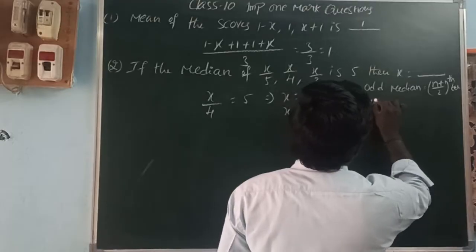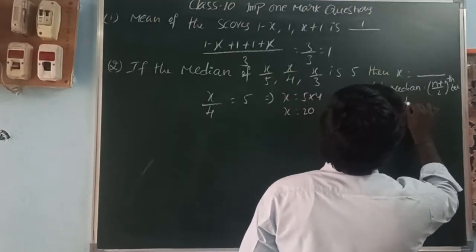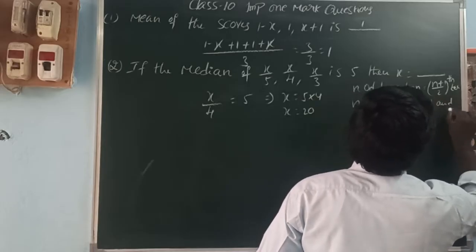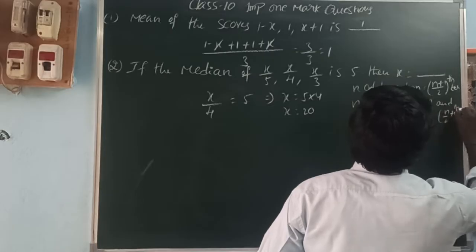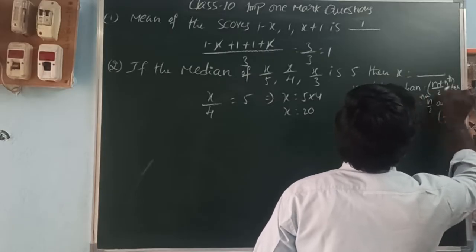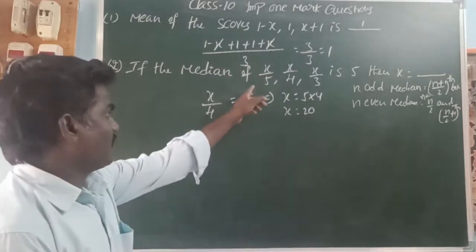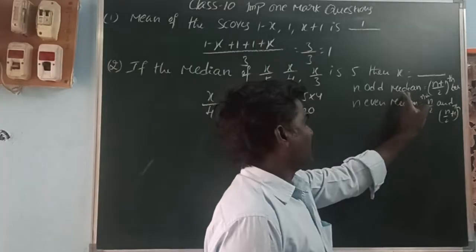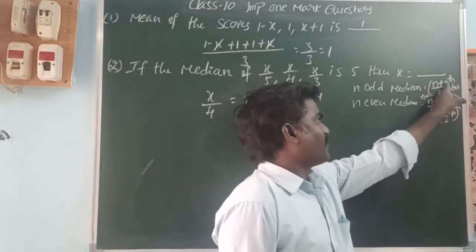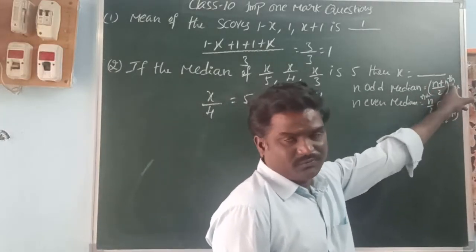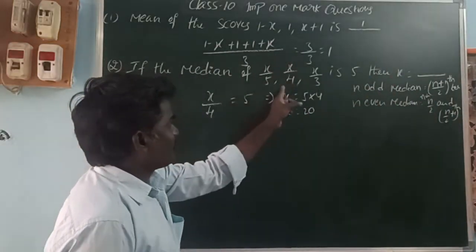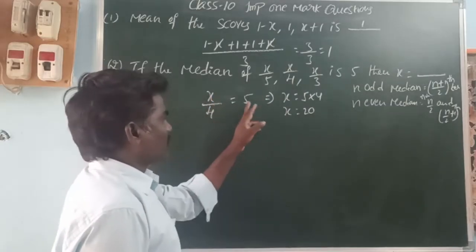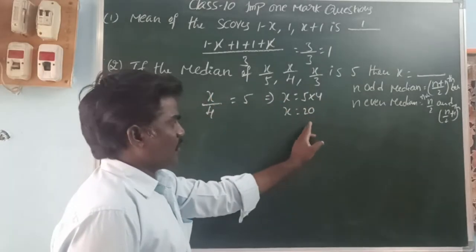If n is even, the median is the average of the n/2 and n/2 plus 1 terms. Here there are 3 observations, which is odd, so median is at position (3+1)/2 = 2. The second term is x/4, and that equals 5, so x equals 5 times 4, which is 20.